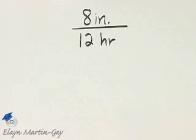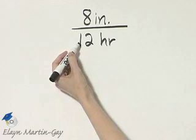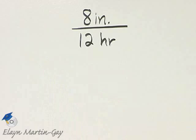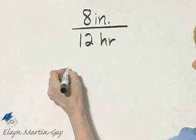To write this as a unit rate, you can go off to the side and try dividing 12 into 8. It, of course, will divide, just not evenly. So I'm going to write it as a fraction instead.